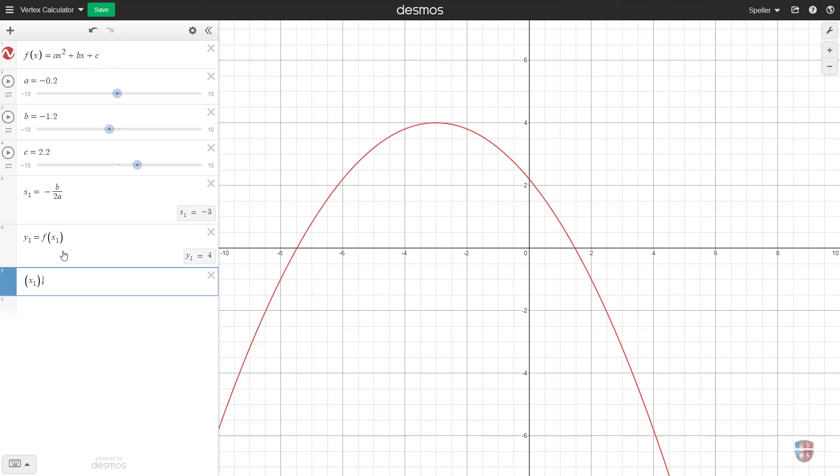And then we're going to insert y sub 1, and y sub 1 is going to be the value that we get by using the input of x. So at this point we have a label. Let's go ahead and label that the vertex, and we see that here.